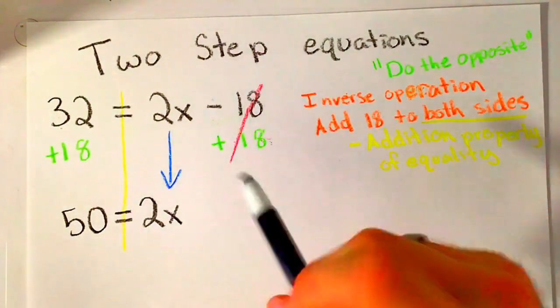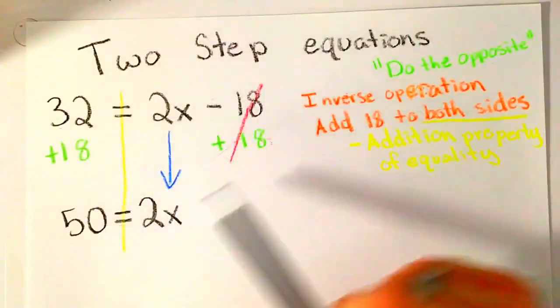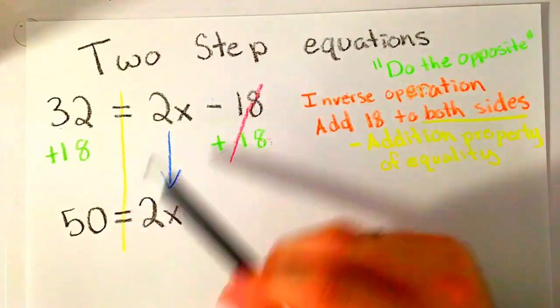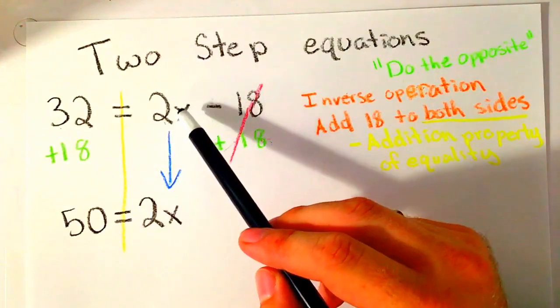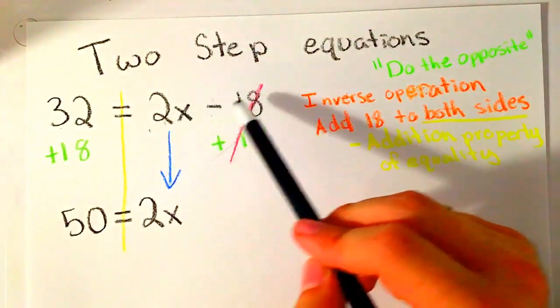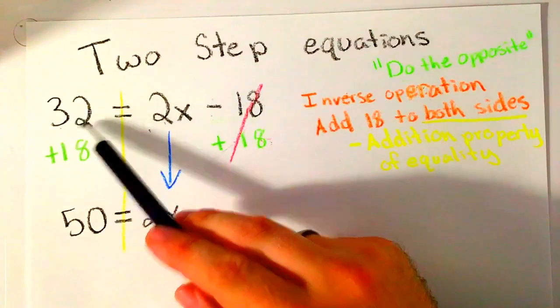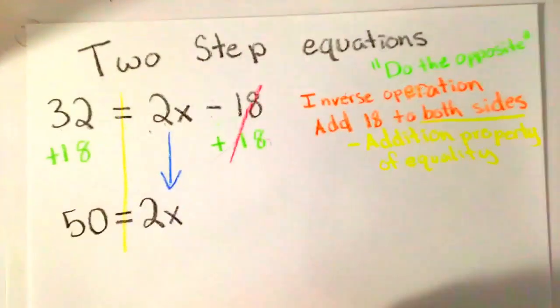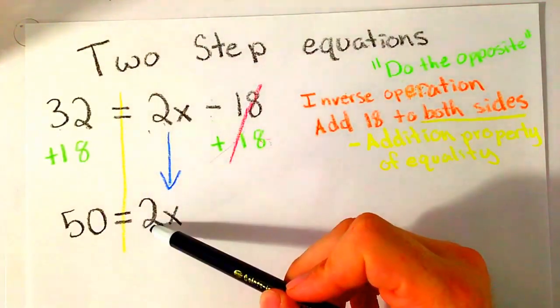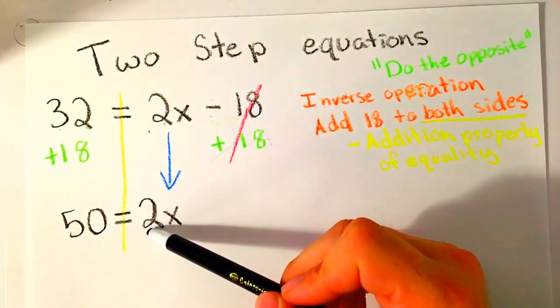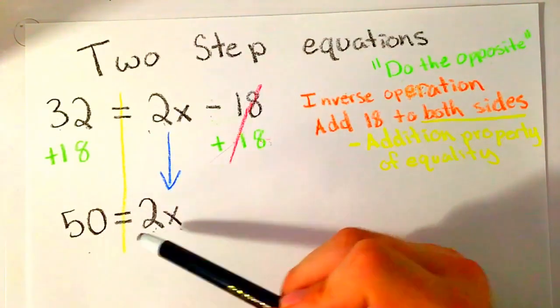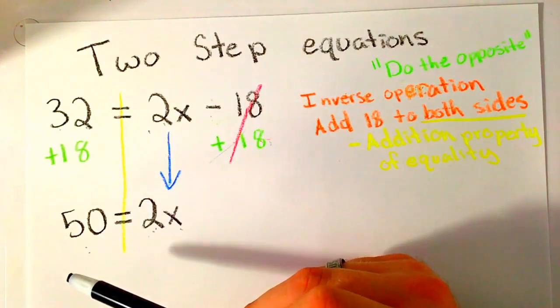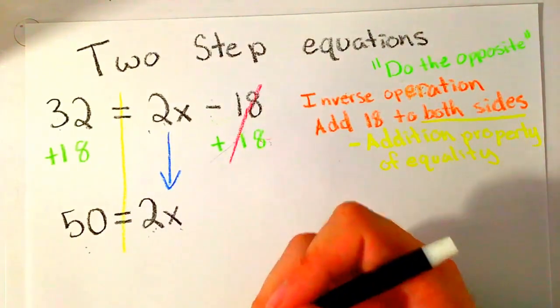Now what am I saying? I haven't changed the information, just the way I understand it. I needed to know what number times 2 minus 18 gave me 32. When I add the 18 over, now I understand it better. What I really need to find out is what number times 2 will give me 50. I know you might already have the answer, but we can do this algebraically.